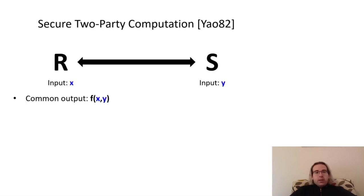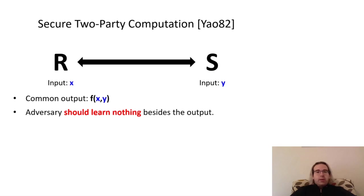We'll focus on the setting of secure two-party computation, originally proposed by Yao, where we have a receiver with input X and a sender with input Y, who wish to jointly compute some functionality F on their respective inputs. To compute this function securely, we intuitively want the property that an adversary who controls one of the two participating parties shouldn't learn anything besides the output F of X and Y.